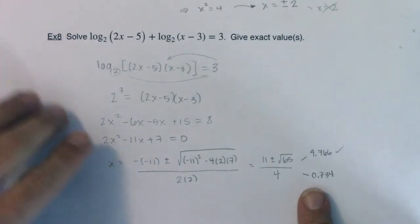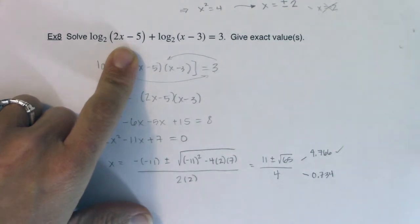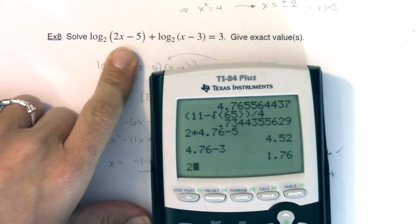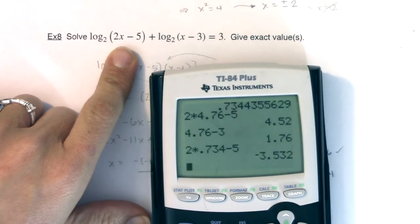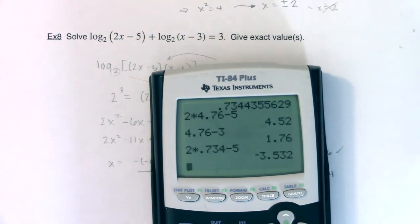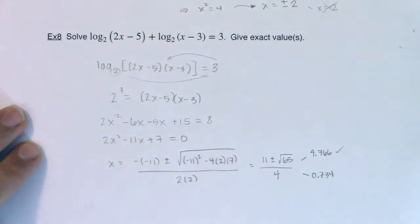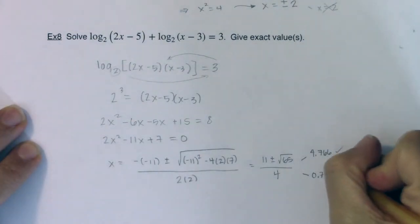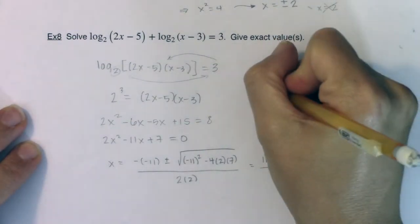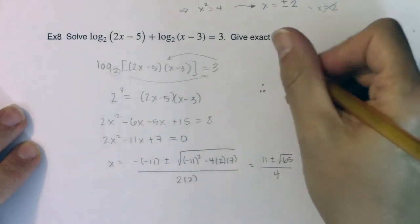Now on the flip of that, let's try 0.734. If I plug in 0.734 and try and do 2x minus 5, we're looking at a negative number, and I can't have an argument be 0 or negative, so this answer gets booted out. So my only answer in exact values...